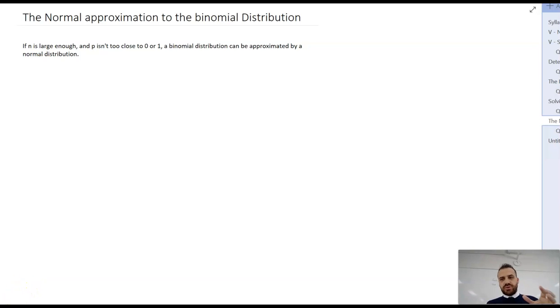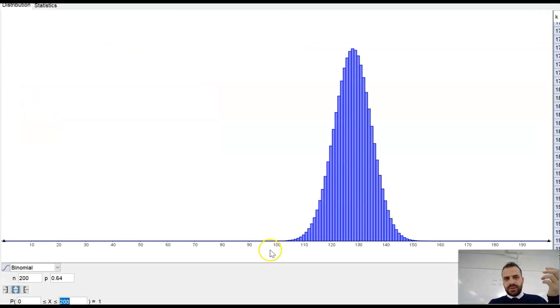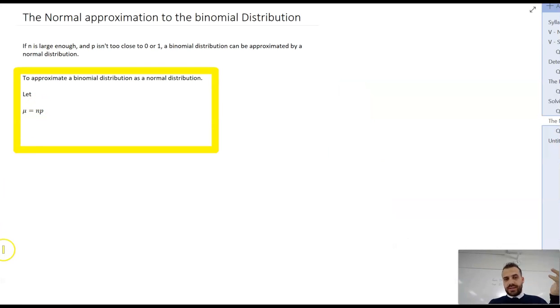So now we just need two things. We need a mean and we need a standard deviation. Because if we have a binomial distribution and we want to approximate using a normal distribution, then we need a mean and a standard deviation to do it. Approximate a binomial distribution as a normal distribution. Let the mean equal np. So in my first example, if you've got 200 trials and a probability of success of 0.64, multiply those two together and you'll have your mean. That's our mean. What about our standard deviation?